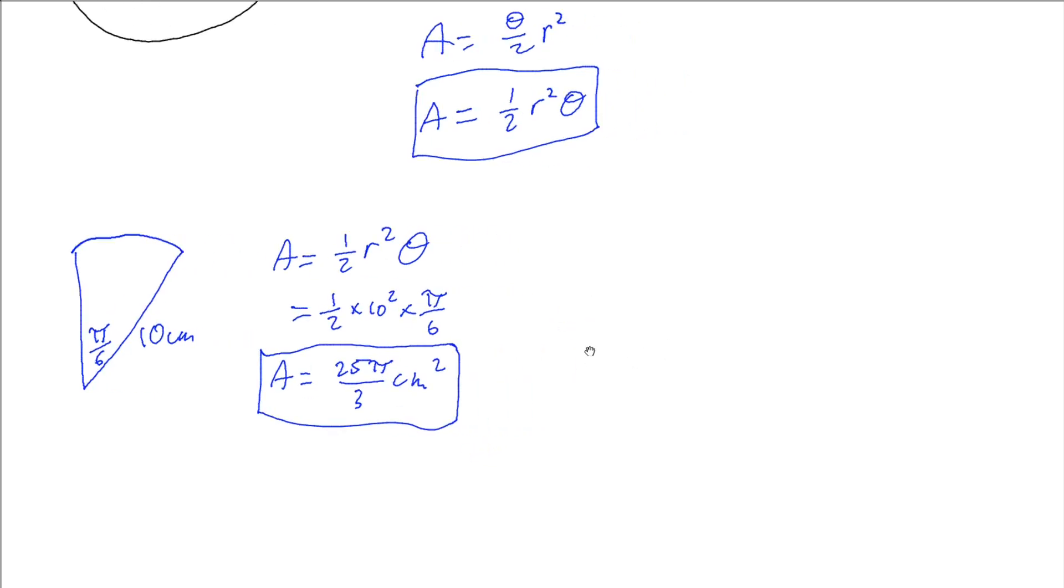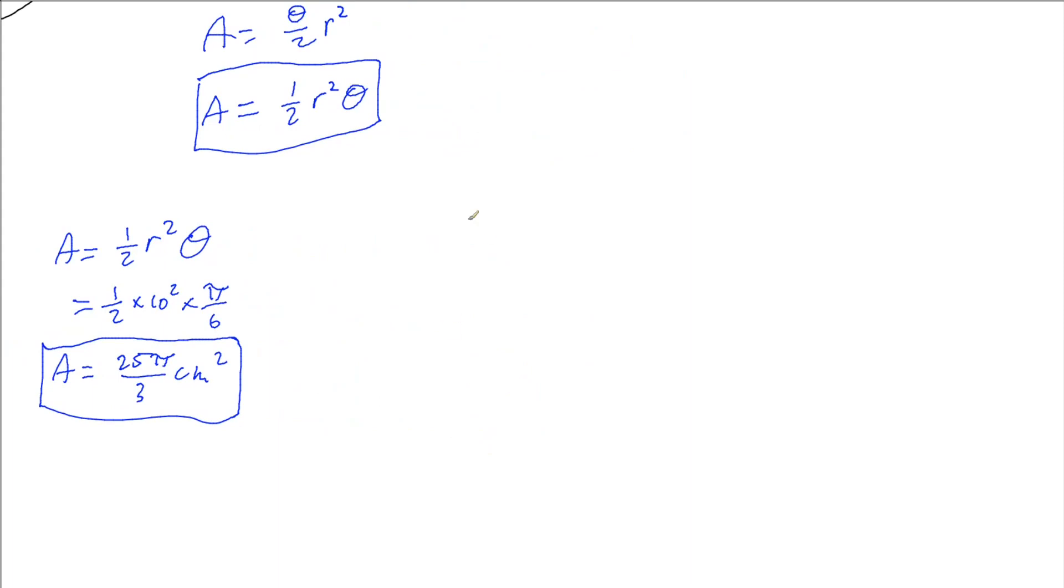Let's have a look at a slightly more complicated problem. What if I've got a circle and we've gone and rotated through an unknown angle. So I've got this unknown angle here that we've rotated through. The radius of my circle is 10 centimeters, but we're also told that the arc length generated was 15 centimeters. So I know that information and I want to know what's the area of this sector here. I don't know the angle but I know the arc length and I know the radius.